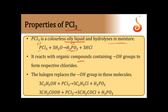PCl3 reacts with organic compounds containing an OH group and forms their respective chlorides. It can be called a chlorinating agent, as the OH group is replaced by chlorine. For example, ethyl alcohol (C2H5OH) reacts with PCl3 to give ethyl chloride. Similarly, acetic acid also has an OH group which is replaced by chlorine from PCl3, giving acetyl chloride. So PCl3 can be used as a reagent to replace OH groups from organic molecules — hence it is called a chlorinating reagent.